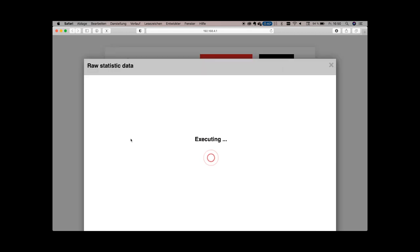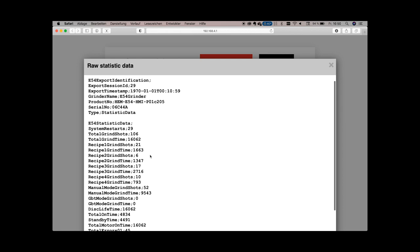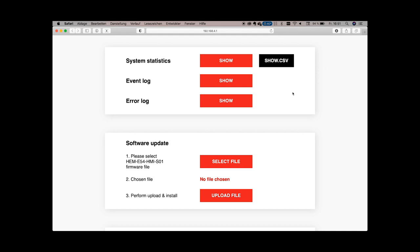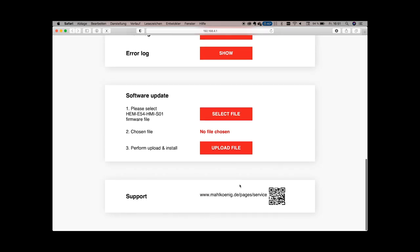The system statistics can also be shown as CSV. The last section on this page allows you to update the firmware of your grinder. That's it.